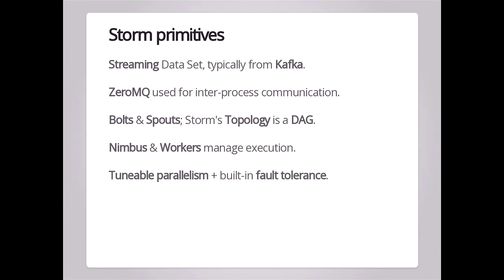We're going to cover Kafka in the second half of the talk to explain why it's a good tool. ZeroMQ is used under the hood for IPC. Bolts and spouts are the core abstraction in Storm. A spout is basically a process that generates a stream of data. A bolt is a process that works with that stream of data and does some transformation on it. That topology is laid out in a directed acyclic graph — your entire worker and queue system as a model of multi-stage processing. You can tune the parallelism and get fault tolerance for free.